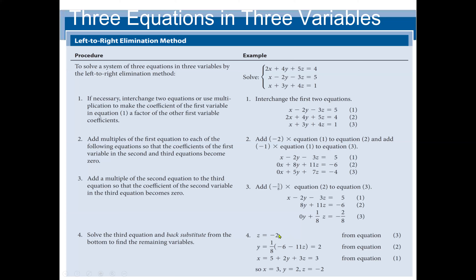So Z is negative 2 and Y is 2. We go to the first equation and substitute Y and Z. X equals 5 plus 2Y plus 3Z, which gives us 5 plus 2 times 2 plus 3 times negative 2, and we get X equal to 3. So the solution is X equals 3, Y equals 2, Z equals negative 2. This is the left-to-right elimination method.